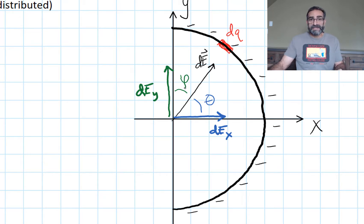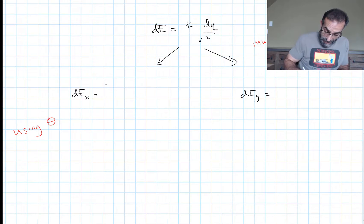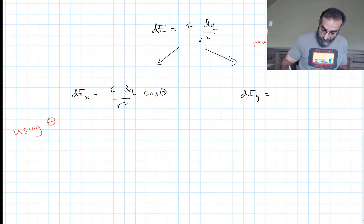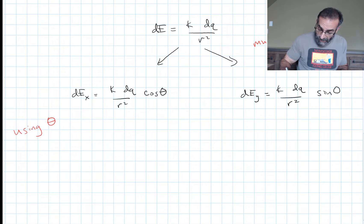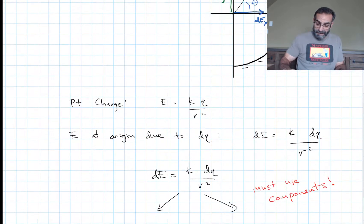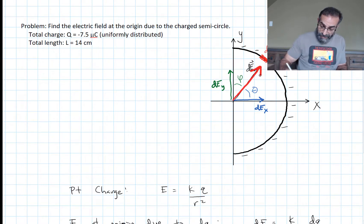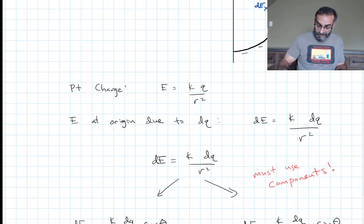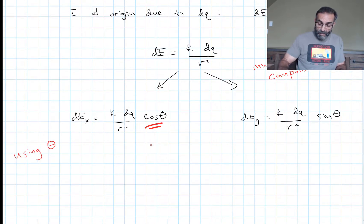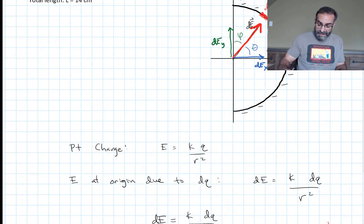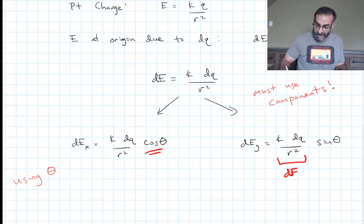Let's use theta first — the angle between dE and the x-axis. The x-component is dEx = k·dq/r²·cos(θ) and the y-component is dEy = k·dq/r²·sin(θ). For the x-component we use cosine of theta, and for the y-component we use sine of theta times the hypotenuse.